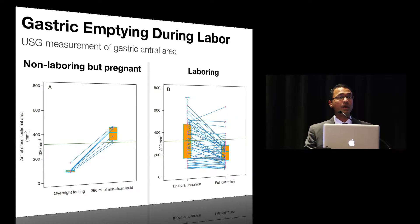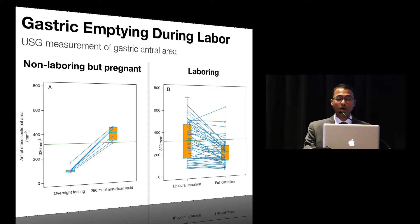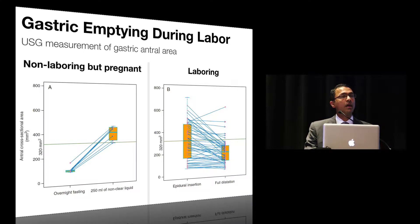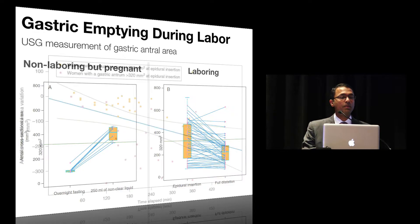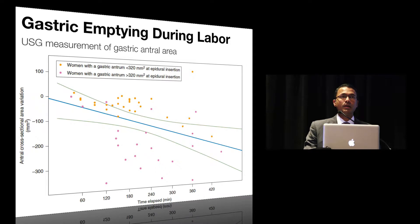Parturients were not allowed to take anything orally during the entire course of the study. The cross-sectional area decreased drastically from about 320 to about 200 mm² during labor. The gastric antral cross-sectional area was more than 320 in about 50% of parturients at the time of epidural initiation, and down to about 13% at full cervical dilation, suggesting that during labor in the setting of epidural analgesia, gastric motility is perhaps preserved. When plotted against duration of labor, there was a gradual decline in gastric antral cross-sectional area over time.